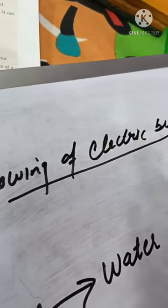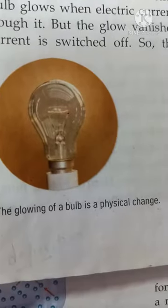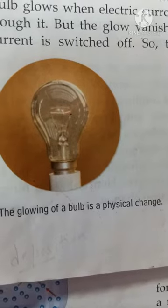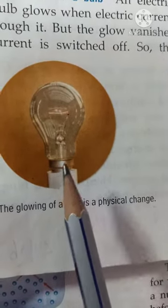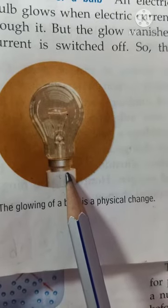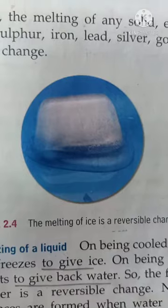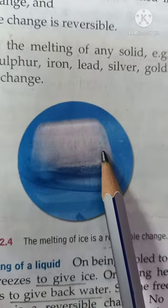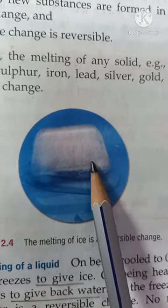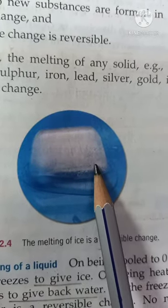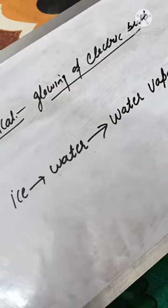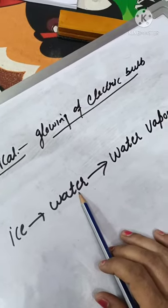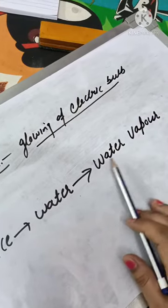If we talk about glowing of an electric bulb, the mass of the electric bulb does not change after it remains lit for some time — the mass when switched on equals the mass when switched off. Similarly, a given mass of ice on melting gives the same mass of water, and a given mass of water on heating gives the same mass of water vapor.